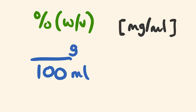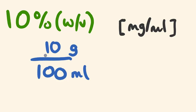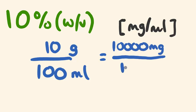I'm going to show you how to work this out in terms of milligrams per mil — this is a much easier way of working with concentration because you can easily then convert things and work things out. So what does 10% W/V equal in milligrams per mil? Well, 10% W/V means 10 grams per 100 mils. There are 1,000 milligrams in a gram, so if I multiply 10 by 1,000, I get 10,000 milligrams per 100 mils.